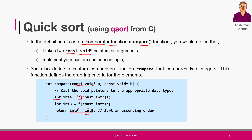If we are working with floats, the compare function will use float instead. We accordingly cast the void pointer to a float pointer to fetch the value. The comparator function will be adjusted accordingly depending on the data type we are working with.